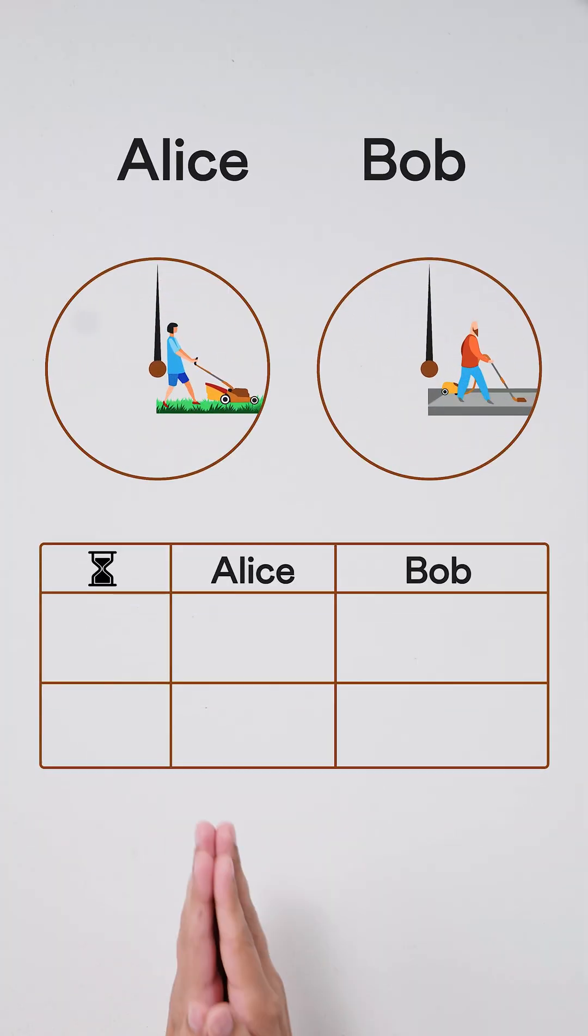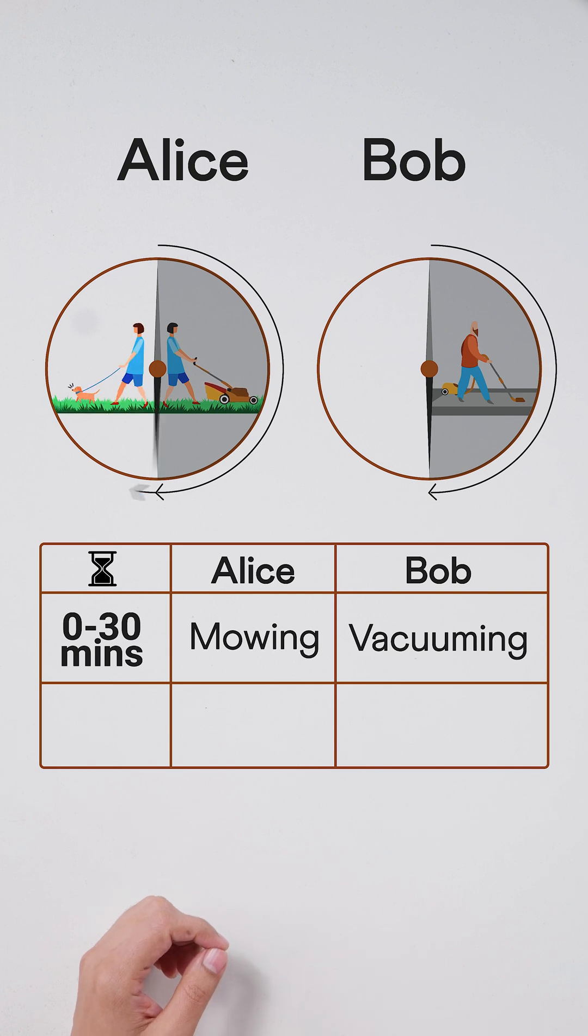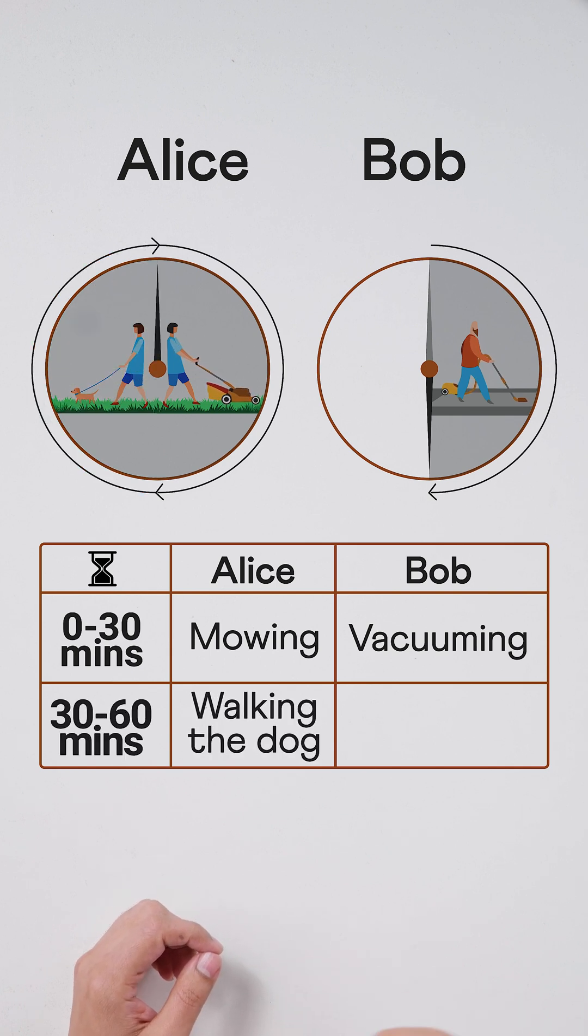Here's one way to do them. Both can work in parallel to finish the mowing and vacuuming in 30 minutes, and then one of them can walk the dog in the next 30 minutes. So they are done in 60 minutes.